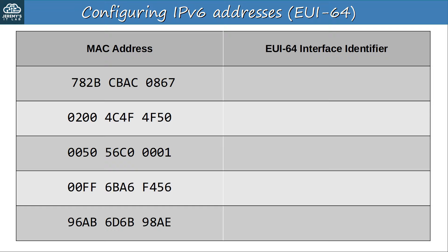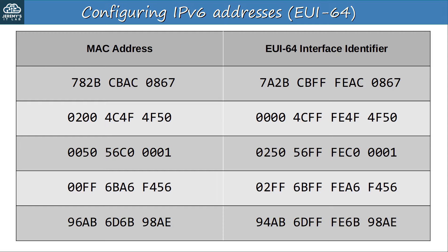Before I move on to explain more, here are a few practice questions. Convert each MAC address to an EUI-64 interface identifier. Remember the 3 steps: 1, split the MAC address in half; 2, insert FFFE in the middle; and 3, invert the 7th bit. Pause the video now to convert the MAC addresses. Here are the answers. If you want some more practice, try writing out some random MAC addresses and finding the EUI-64 interface identifier.